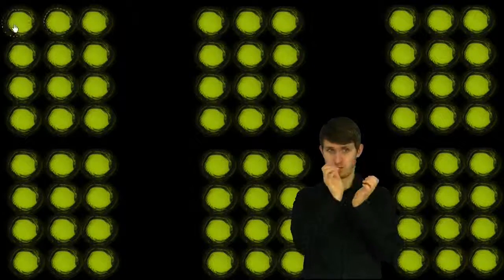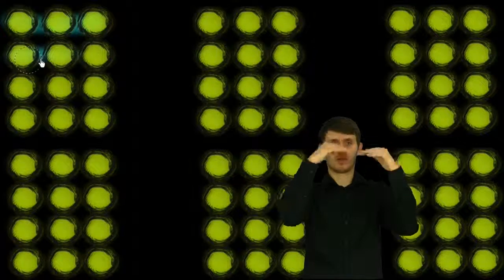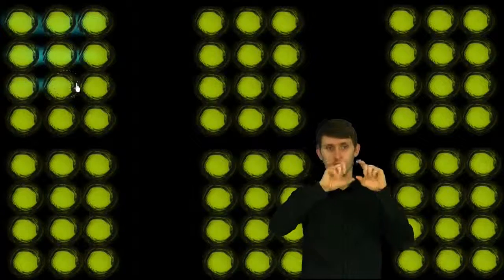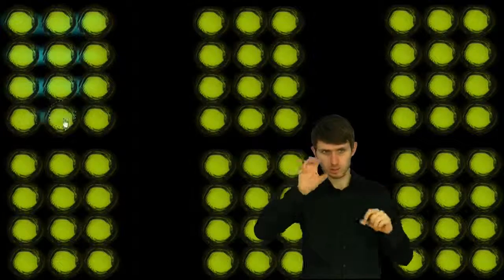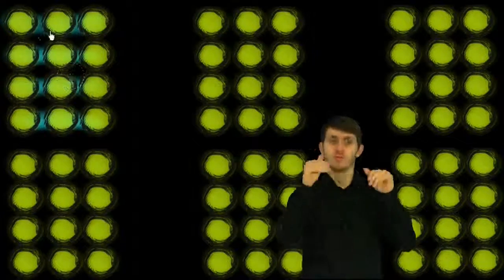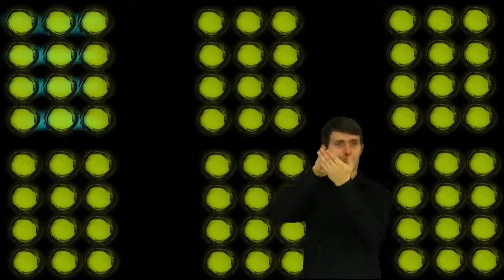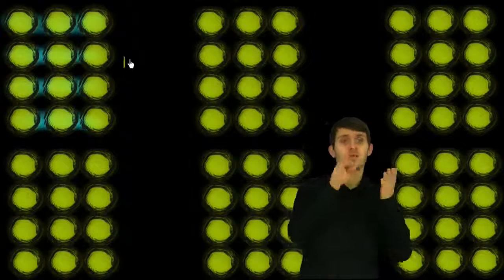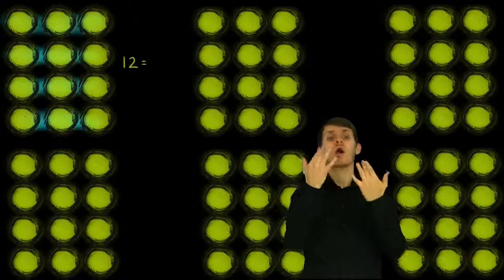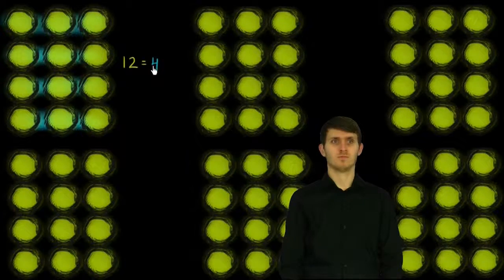For example, I could view these 12 balls as 1 group of 3, 2 groups of 3, 3 groups of 3, 4 groups of 3. So I could view 12 as being 4 groups of 3. The way that we would write that is 12 is equal to 4 groups of 3.